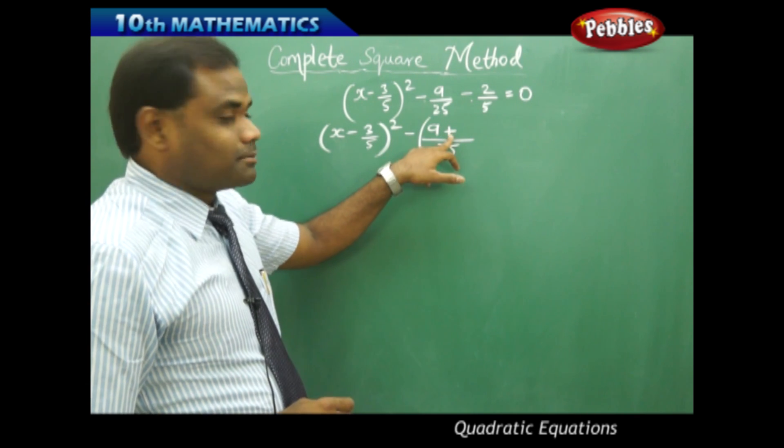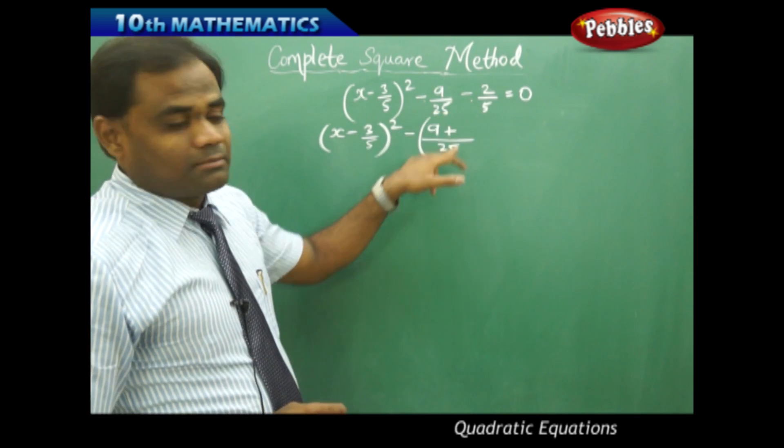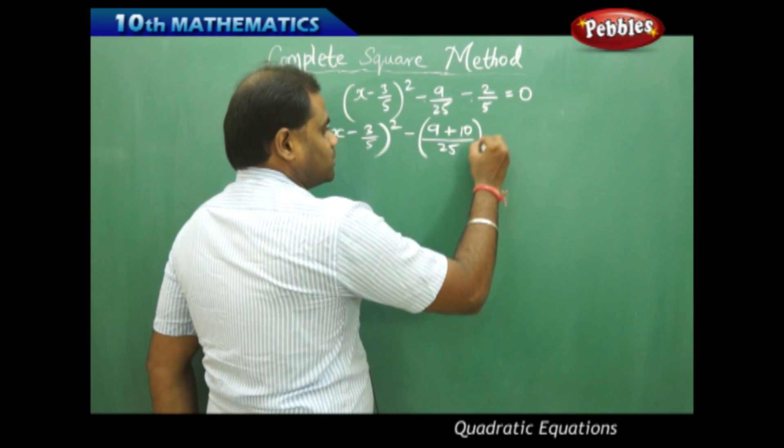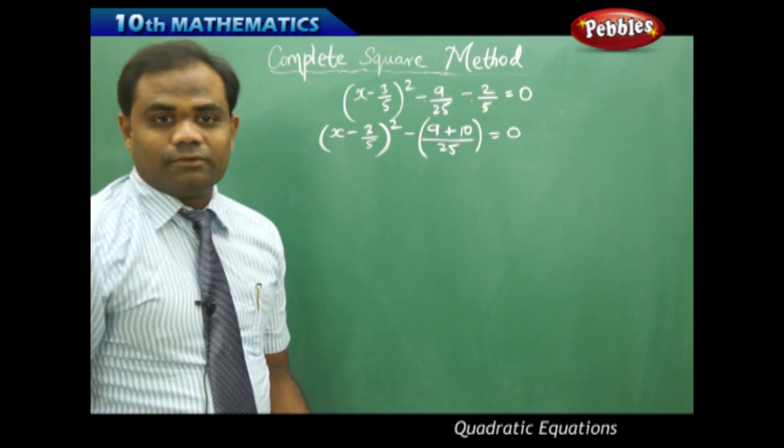So I get plus inside the bracket and then 5 times 5 is 25, and then 5 times 2 is 10 is how I do the LCM of the two given numbers.